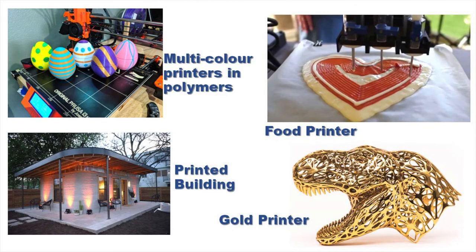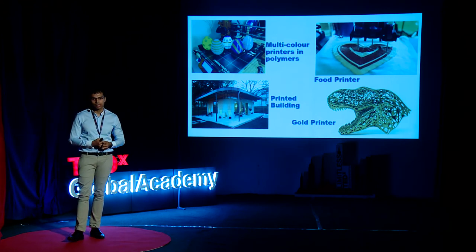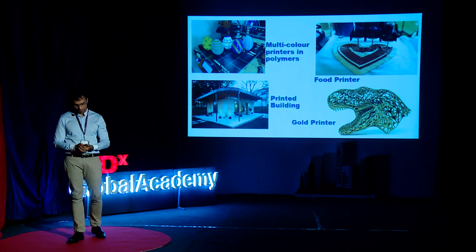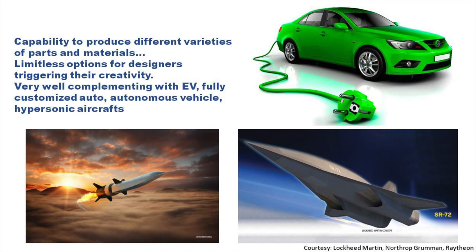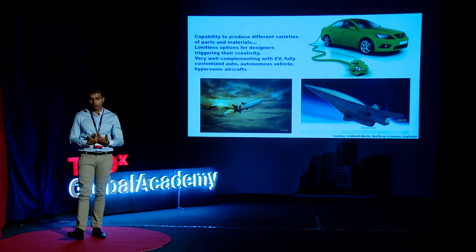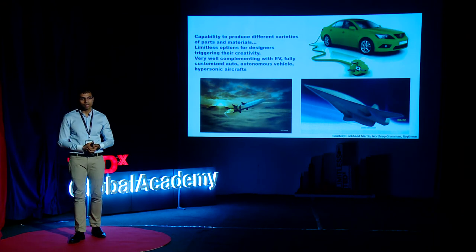There are multi-coloured printers printing life-size objects in polymers in just a few hours. There is a food printer printing hot pizzas with just the press of a button. Today there are buildings, structures and bridges being 3D printed to save construction time. There is a gold printer which can print intricate, lightweight designs very cost-effectively, allowing different varieties for each customer. This technology very well complements and augments electric vehicles, fully customized automobiles, autonomous vehicles, morphing wing aircraft, and hypersonic aircraft.